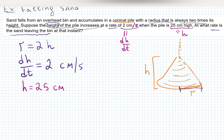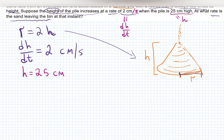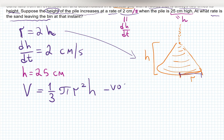Step one: read the problem and make a picture. Step two: create an equation that connects the variables. The equation that connects r and h in this picture is the volume of a cone: V equals one-third pi r-squared times h.